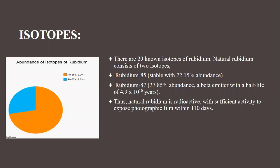Next, we will discuss isotopes. There are 29 isotopes of rubidium, but only two occur naturally: rubidium-85 and rubidium-87. Rubidium-85 is stable and is 72.15% abundant in nature. Natural rubidium is radioactive with sufficient activity to expose photographic film within 110 days.